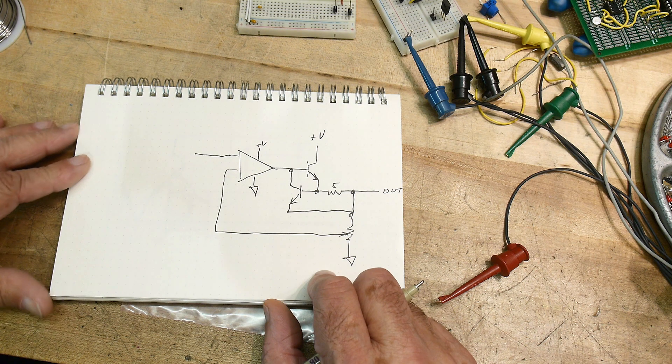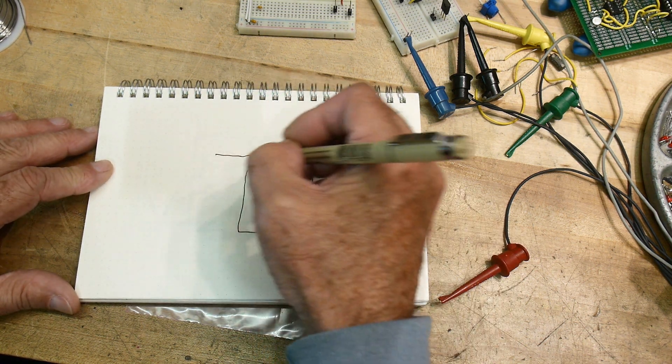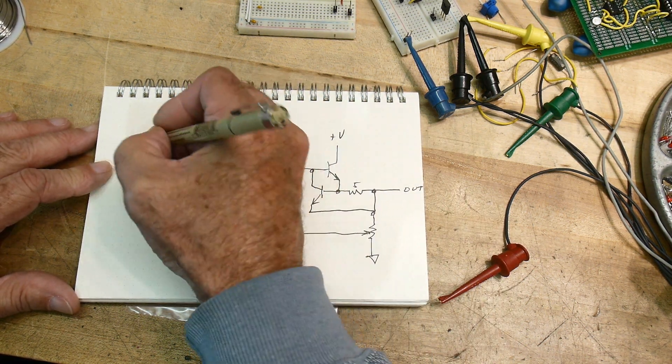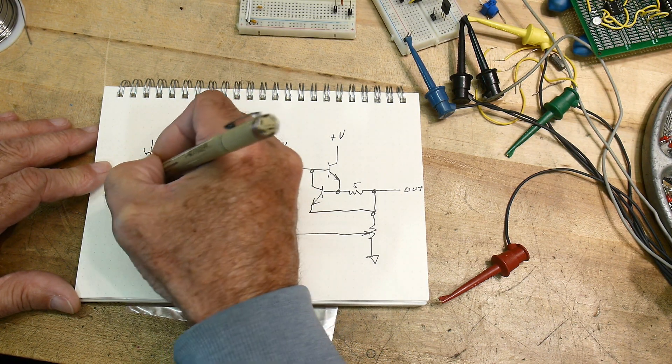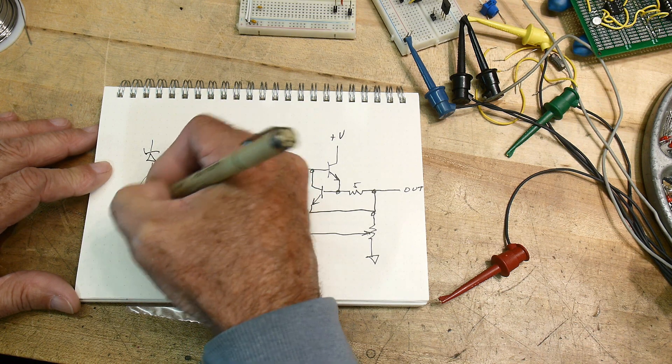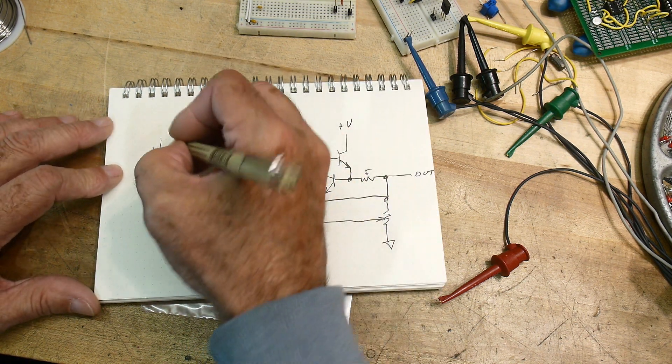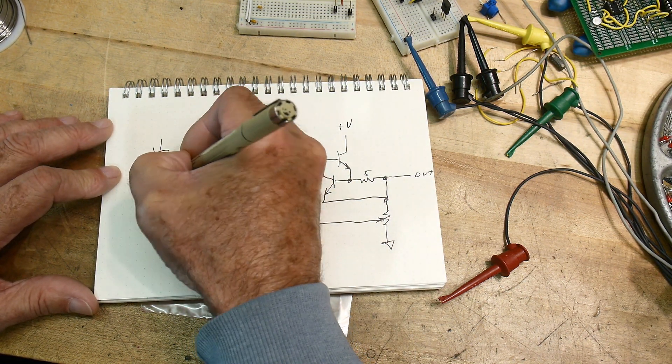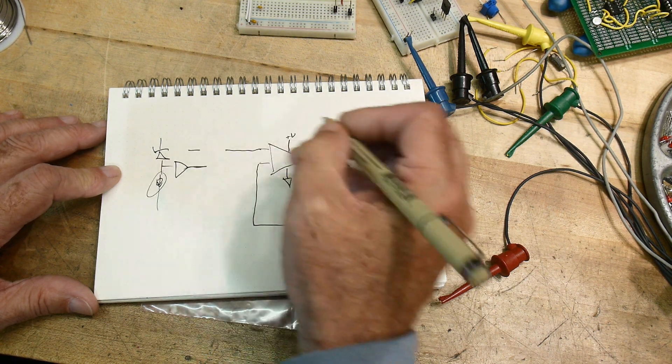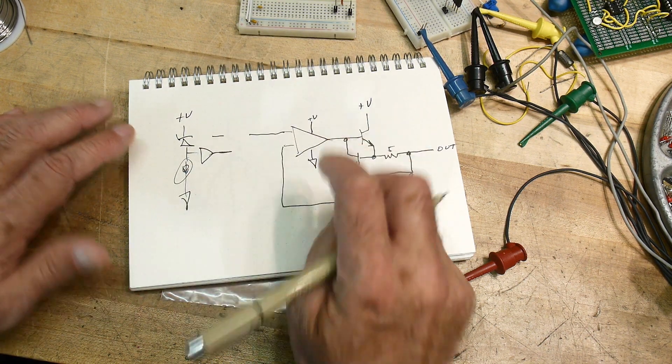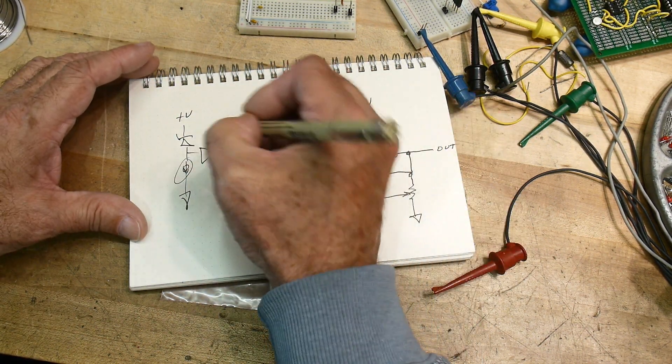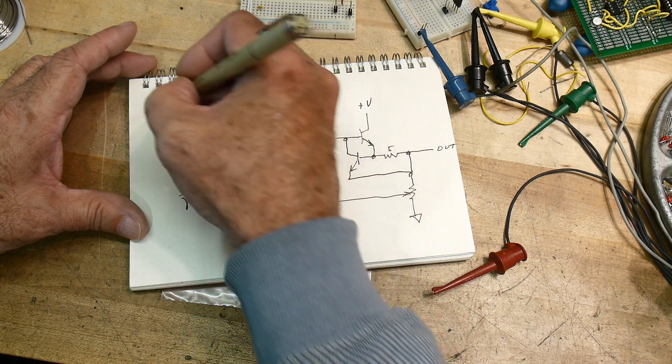And if that gets to be big, then this transistor will start to turn on which will pull down the base here, which will turn things off. And then the output, you monitor the voltage on the output and you feed that back around, and we're going to feed that back around to some stable voltage here.